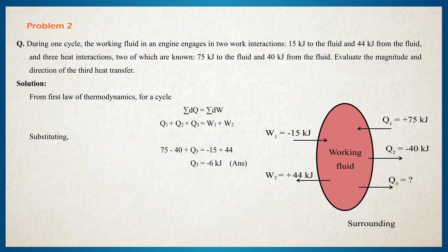So Q3 is equal to minus 6 kJ. That is, 6 kJ of heat is rejected from the system to the surroundings.